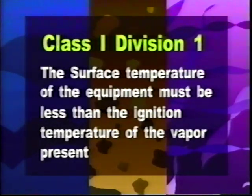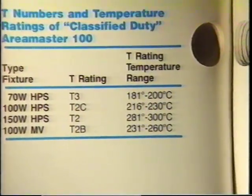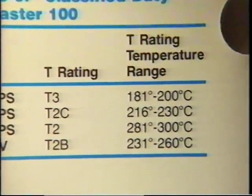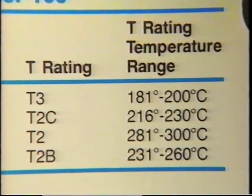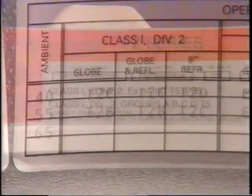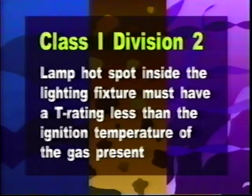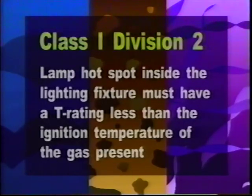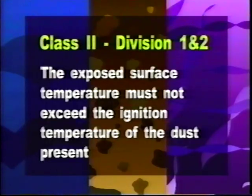In a Class 1, Division 1 area, the surface temperature of the equipment must be less than the ignition temperature of the vapor present. Equipment that is heat-producing, such as fixtures and motors, are all tested and assigned T numbers. The T number is a rating that indicates the maximum external surface temperature of the equipment, and it relates to a temperature range chart in the NEC. Higher T numbers indicate cooler running equipment, and the T number must appear on equipment nameplates. For Division 2 areas, the lamp hotspot inside the lighting fixture must have a T rating less than the ignition temperature of the gas present. For Class 2 Divisions 1 and 2 areas, the exposed surface temperature must not exceed the ignition temperature of the dust present. Zone T ratings are the same as Class Division T ratings, except they don't have the letter suffixes.